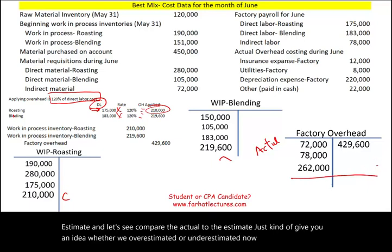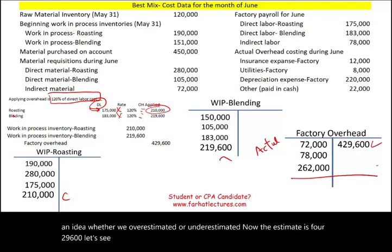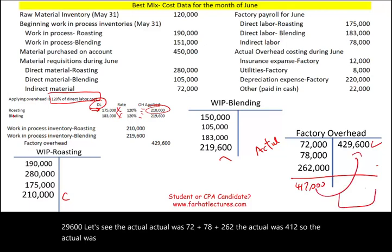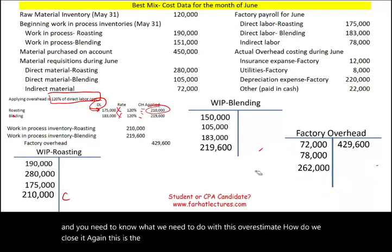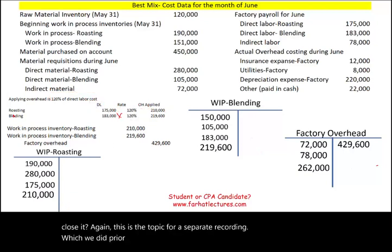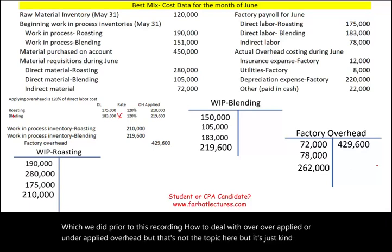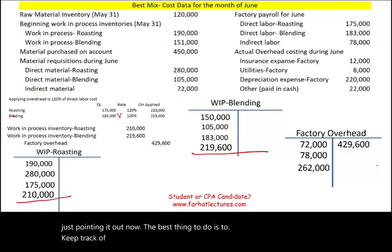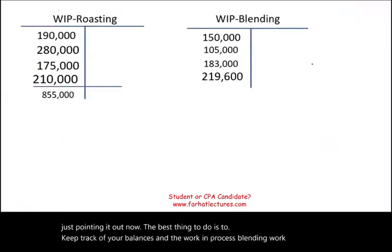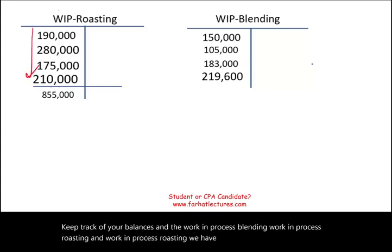Comparing actual to estimated overhead: the applied estimate is $429,600. The actual overhead was $72,000 indirect material + $78,000 indirect labor + $262,000 other = $412,000 actual. Since we applied more than actual, we overestimated — the factory overhead account will have a credit balance. Dealing with over- or under-applied overhead is a separate topic, but the total work in process roasting balance is $855,000.